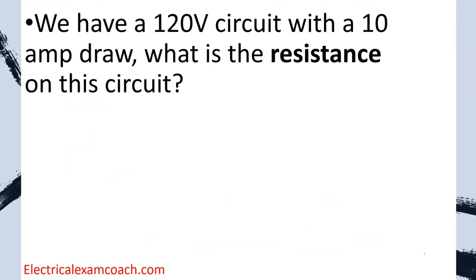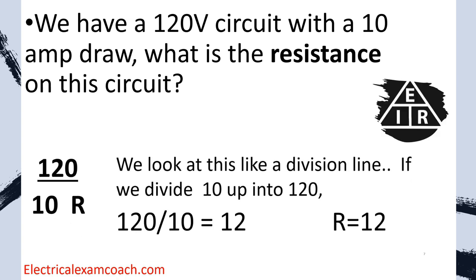Let's imagine we have a 120 volt circuit with a 10 amp draw. What is the resistance on this circuit? We just plug in what we know — 120 on top, 10 below — and divide. 120 divided by 10 tells us there should be 12 ohms of resistance on this circuit. We should be able to read 10 amps with an amp clamp, 120 volts with a voltmeter, and measure 12 ohms of resistance. If we don't have that, something is wrong — failed, broken, disconnected, or causing extra resistance. It's really great for troubleshooting.